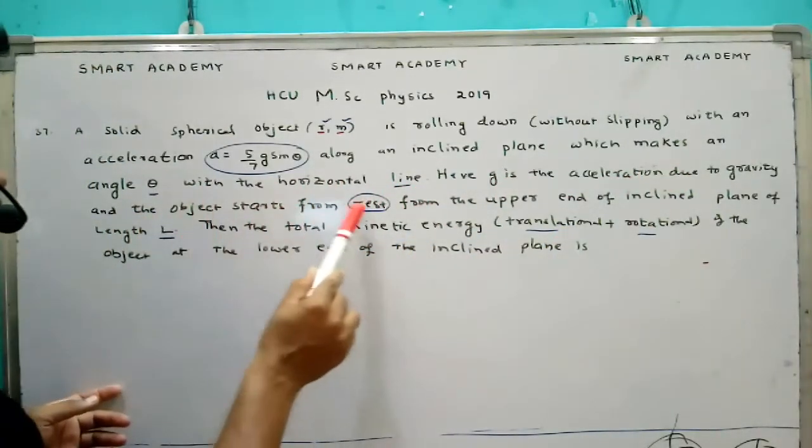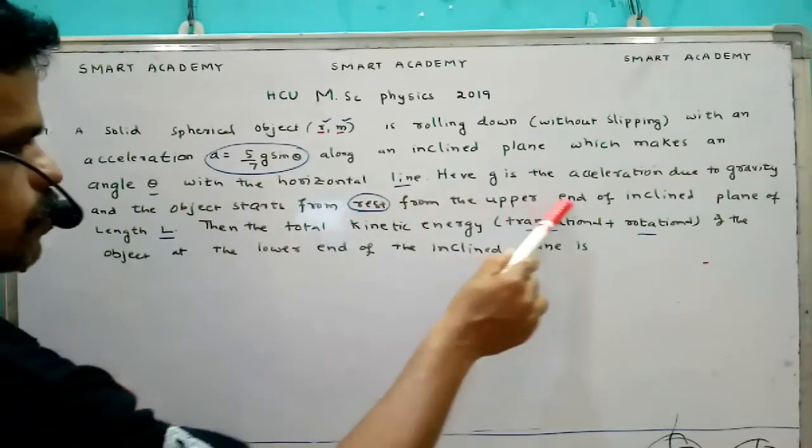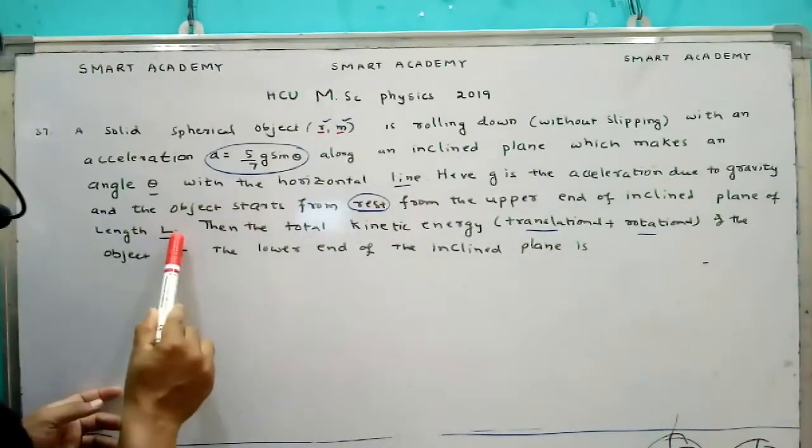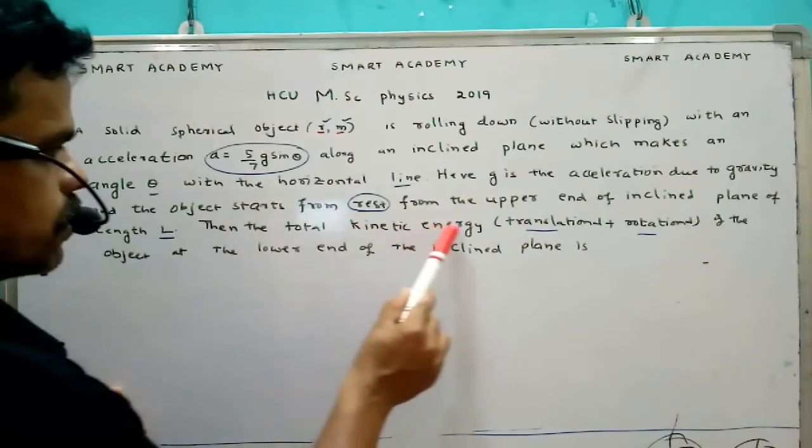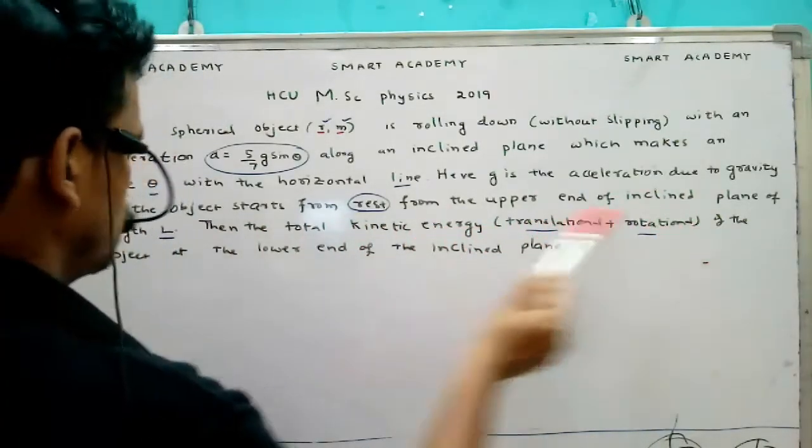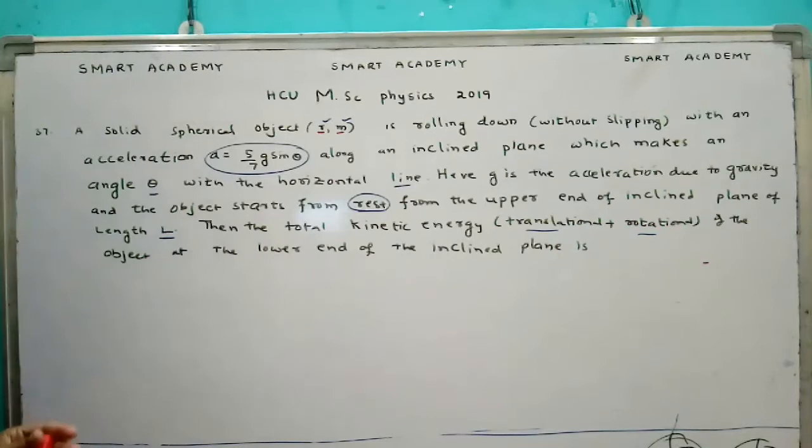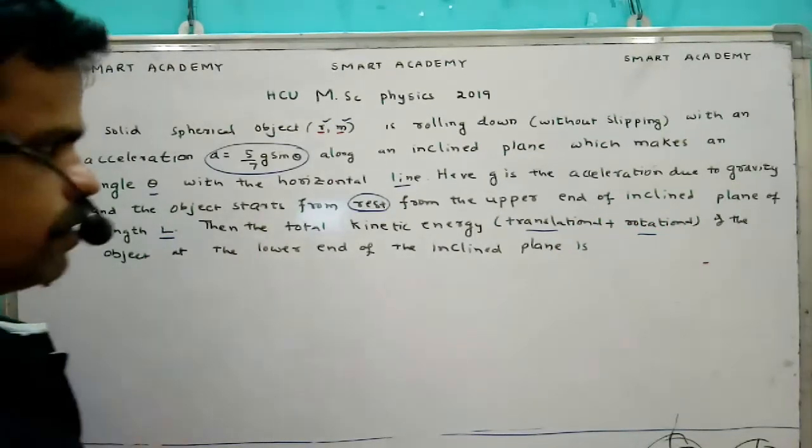Here g is the acceleration due to gravity and the object starts from rest from the upper end of the inclined plane of length L. Then the total kinetic energy, that is translational and rotational, of the object at the lower end of the inclined plane is...